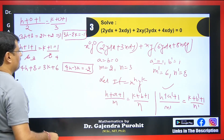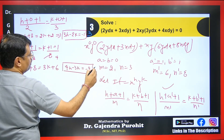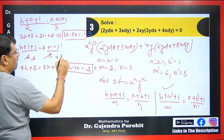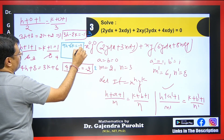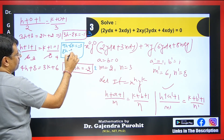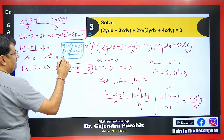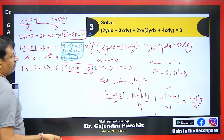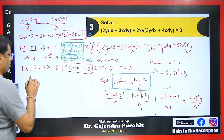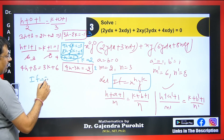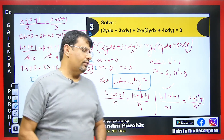Now we solve these two equations simultaneously. Multiplying the first equation by 3 gives 9h − 6k = −3, and multiplying the second by 2 gives 8h − 6k = −4. Subtracting, the k terms cancel and we get h = 1. Substituting back gives k = 2. So the integrating factor is x^1 · y^2, i.e., x·y². Multiplying the original equation by this integrating factor reduces it to an exact form.